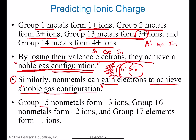Group 15 non-metals — specifically nitrogen, phosphorus, and arsenic — form minus three ions because they want to gain three electrons to reach a total of eight. They have five valence electrons, and five plus three makes eight, so they gain three electrons and thus become a minus three ion.